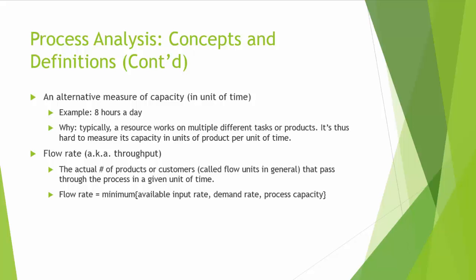Another very important concept in process analysis is the flow rate, also known as throughput. Flow rate is the actual number of products or customers that pass through the process in a given unit of time. More generally, the products or customers are called flow units. Flow rate is determined by the minimum of available input rate, demand rate, and process capacity.